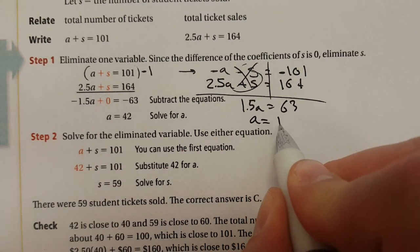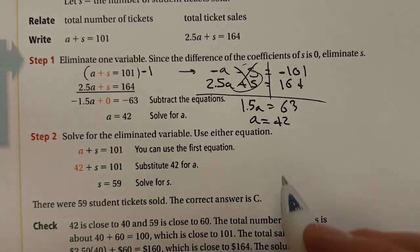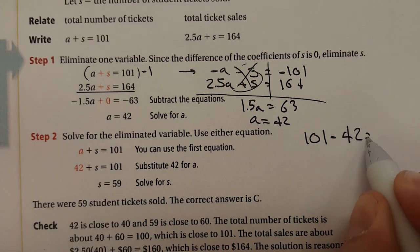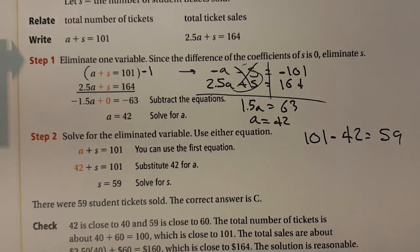We're still going to get 42 adult tickets and then a little bit of mental math. Once you have 42 adult tickets and you sold 101, you would get 59 student tickets. So same math just from a different point of view.